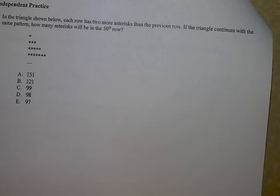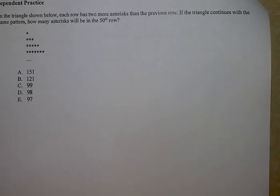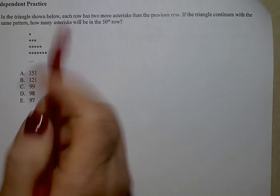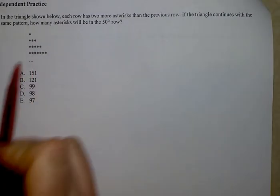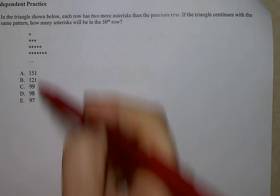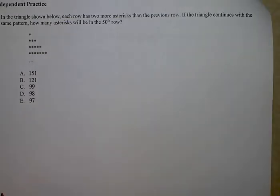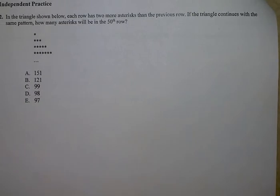Now for this problem, if there was no time limit, I think that you could continue to create this pattern, but you'd go all the way up to 50, which would take a really long time, and then you'd count how many asterisks are in row 50. But there's a quicker way. Remember, when you're doing timed standardized tests, you need to think about testing practice. What's the quickest way to get this answer?